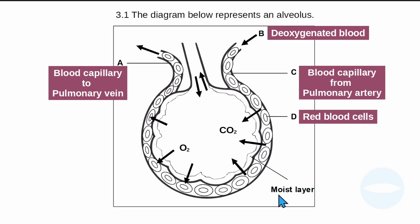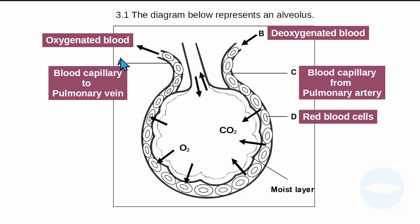There is also a label for the moist layer, which is very important for gaseous exchange. This layer facilitates and is required for gases to diffuse from the alveolus to the blood capillaries or vice versa — it is one of the requirements of effective gaseous exchange. As a bonus label, the blood leaving this area is oxygenated blood, having a higher concentration of oxygen, and it travels to the pulmonary vein.